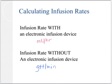When we must manually calculate the infusion rate in terms of drops per minute, we may choose one of two methods: the formula method or dimensional analysis.